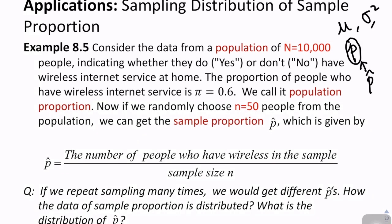We're going to use p hat to estimate the population parameter π. Example 8.5: consider the data from a population of population size, we use capital N here, the population size is equal to 10,000 people.